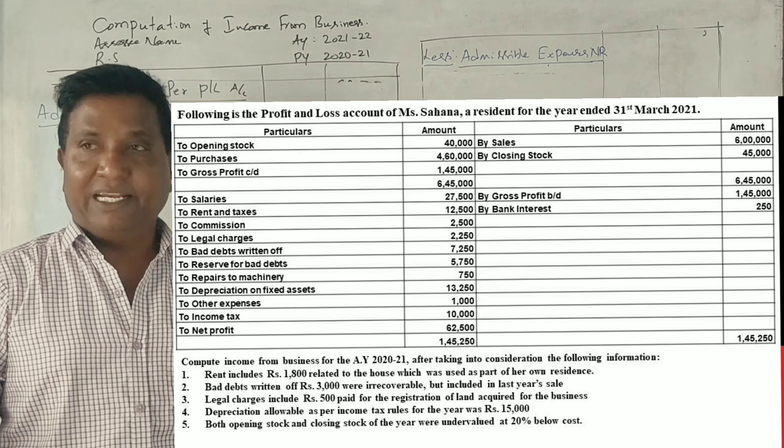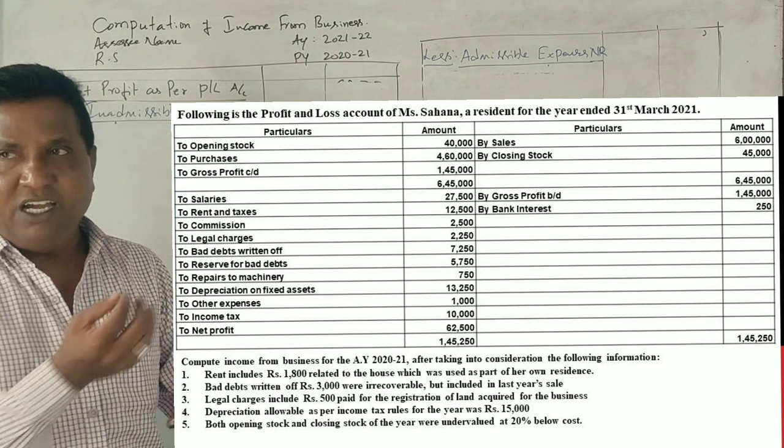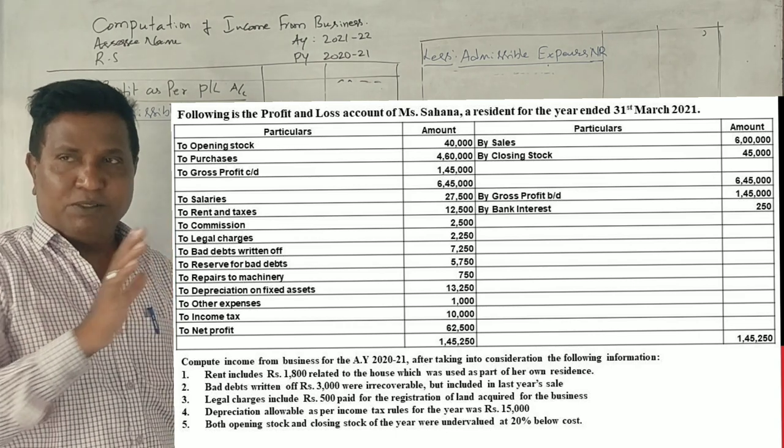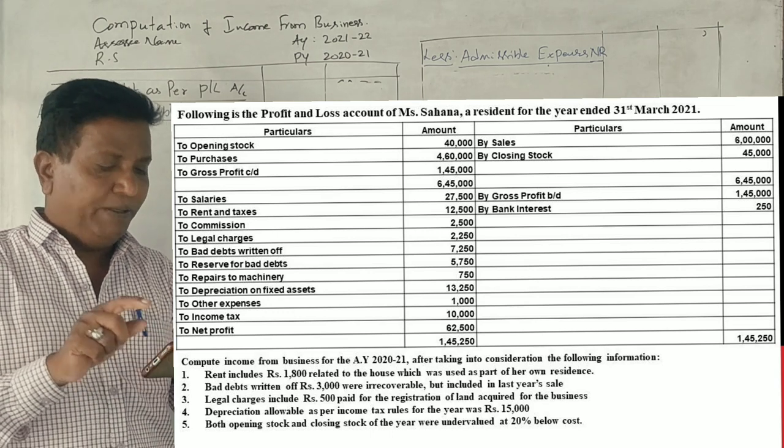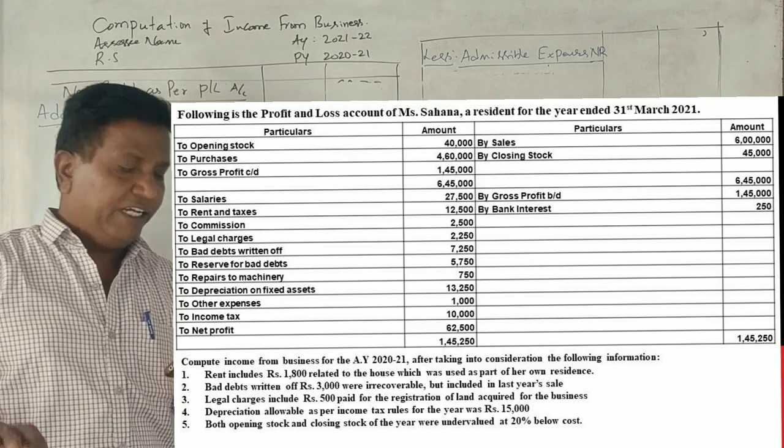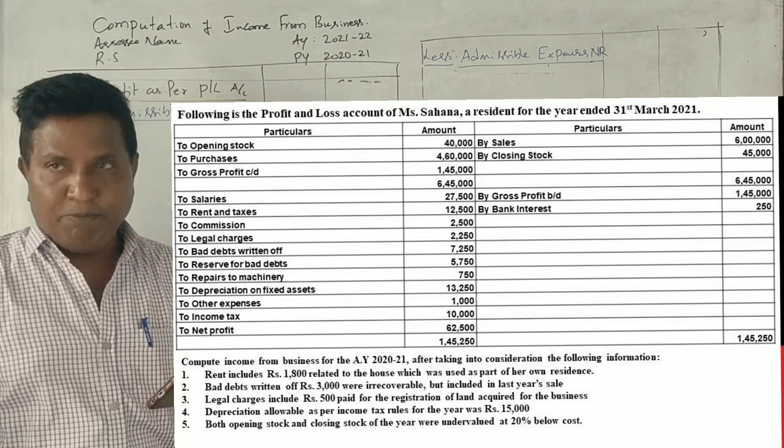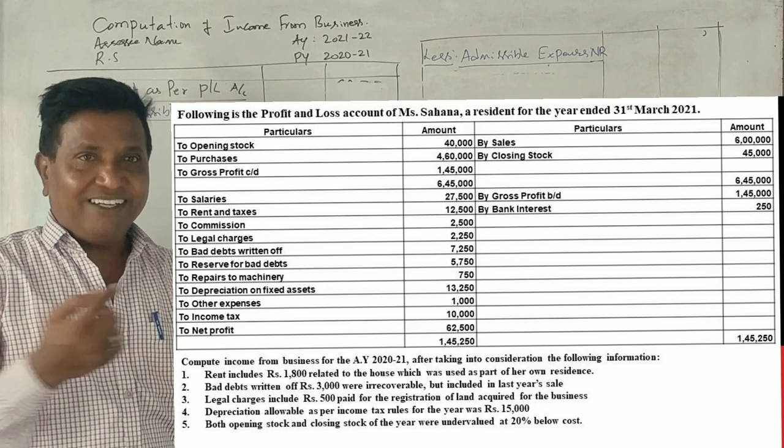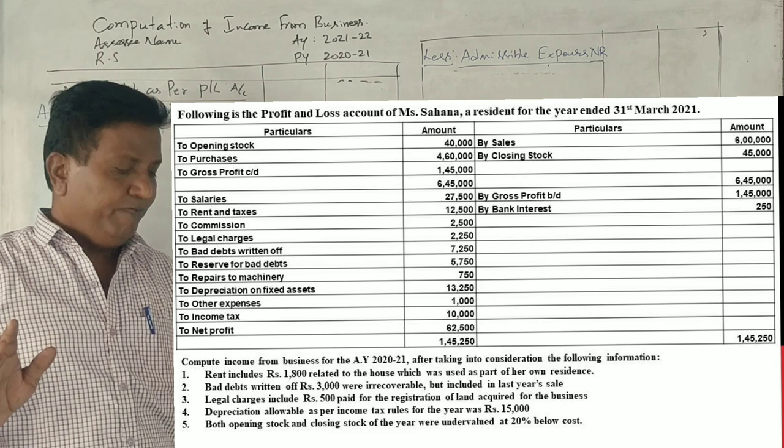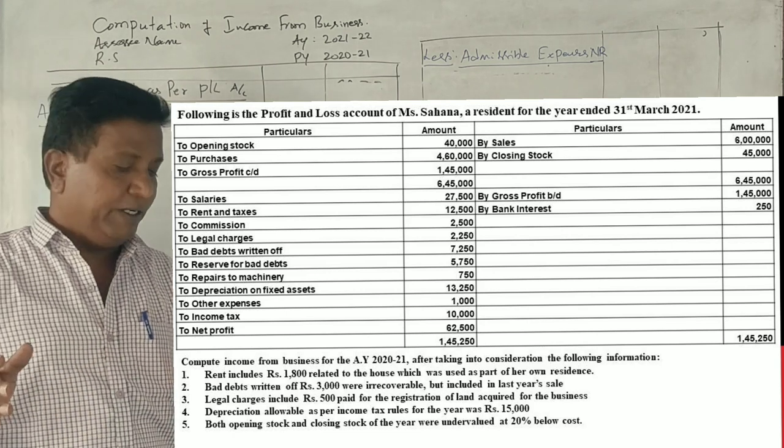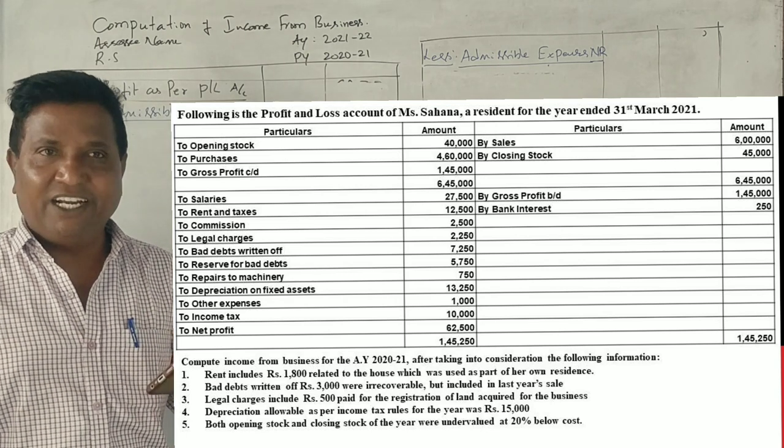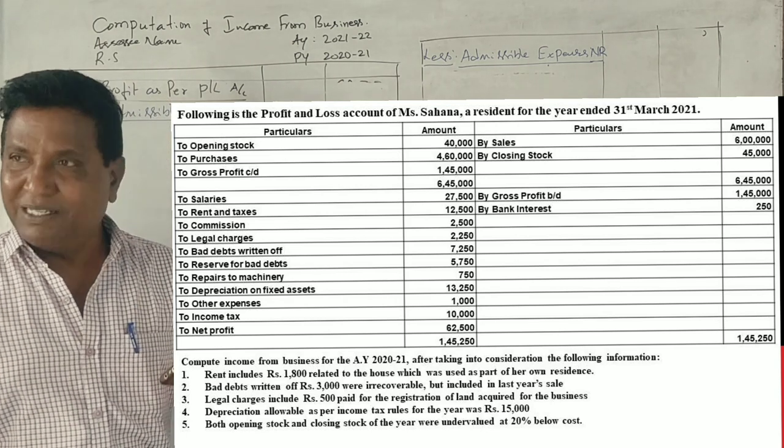Office salary is proprietor salary and the proprietor salary is inadmissible. Interest on capital is inadmissible. General expenses adjustment is not available. Bad debts business is good. Advertisement business. Fire insurance premium is pure business. Income tax inadmissible. Reserve for bad and doubtful debts inadmissible. Motor car expenses no adjustment. Donations inadmissible. Donations and charities inadmissible.